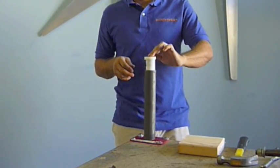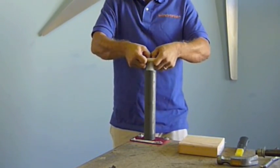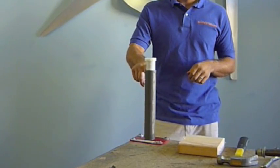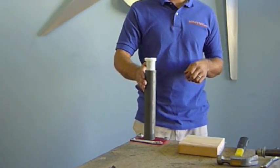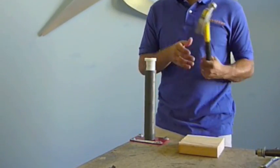And the reason you do that is because you need to pound the yaw bushing into the tower pipe. It's actually press fit in, so the diameter of the yaw bushing is a little bit bigger than the tower pipe. And to get it in, you've got to pound it in.